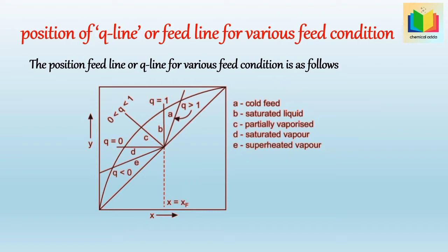For partially vaporized liquid, q is between 0 and 1, so the feed line passes through (xf, xf) with slope −q/(1−q). For saturated vapor, q equals 0, giving slope equal to 0, so the feed line is parallel to the x-axis through (xf, xf). For superheated vapor, q is less than 0, and the feed line again passes through (xf, xf) on the diagonal.